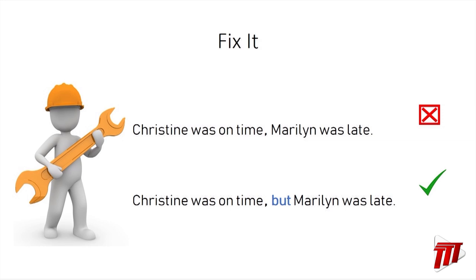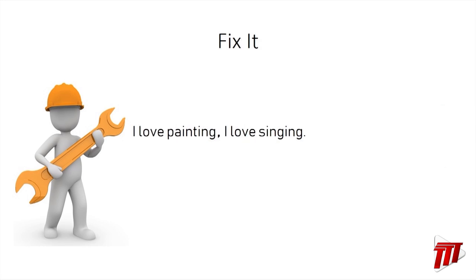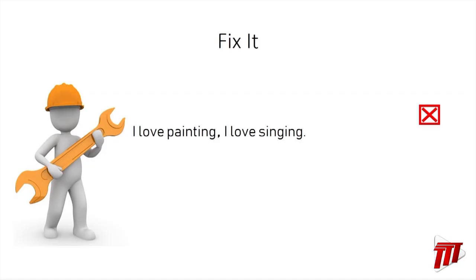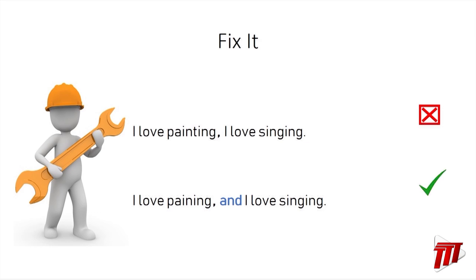Let's look at another one: "I love painting, I love singing." Of course, we can fix this by adding a full stop to make two simple sentences, but let's use a coordinating conjunction. Which one best fits here? "I love painting and I love singing" — because it extends the things that she or he loves. So that's correct.